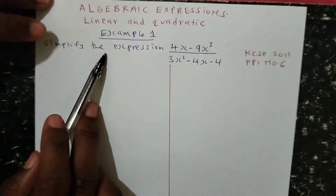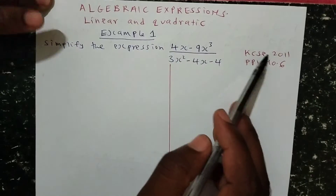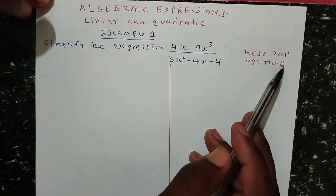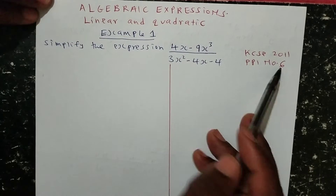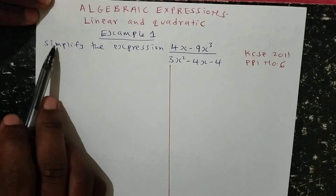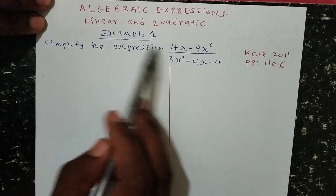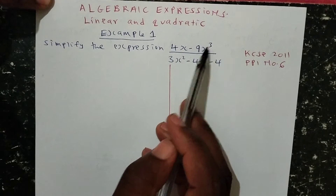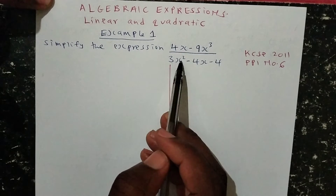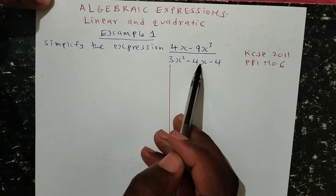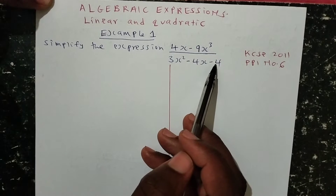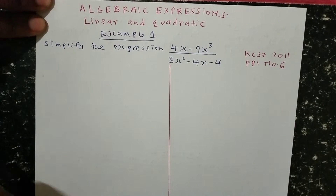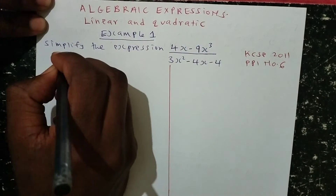Our first example is a past KCSE equation done in the year 2011, paper 1, question number 6. It reads: simplify the expression 4x minus 9x cubed, divided by 3x squared minus 4x minus 4. Let me start by handling the numerator.